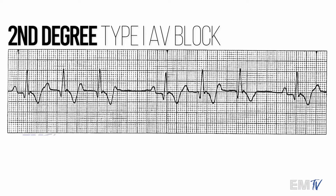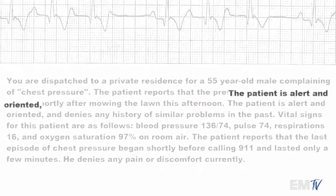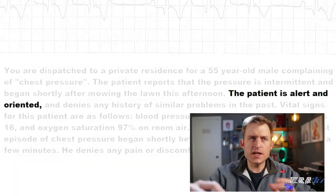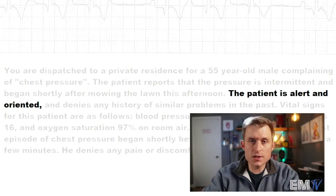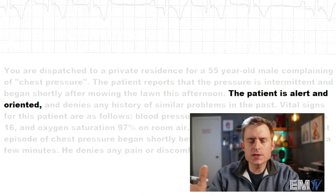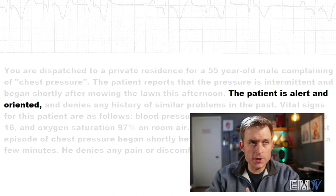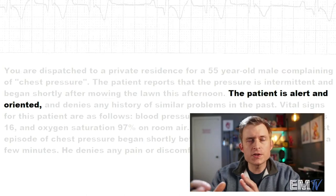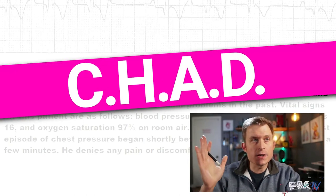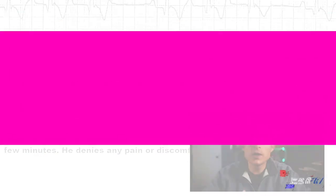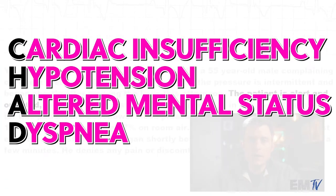Any one of those names is considered acceptable. So let's go ahead and take a look at the scenario and determine whether or not it is stable or unstable. Now remember, at the end of the day, because your patient's condition does not change, static cardiology is about picking one side of the ACLS algorithm or the other and following through with it until you're completely finished. When I'm determining whether a patient is stable or unstable, I use the criteria CHAD, which stands for cardiac insufficiency, hypotension, altered mental status, and dyspnea.